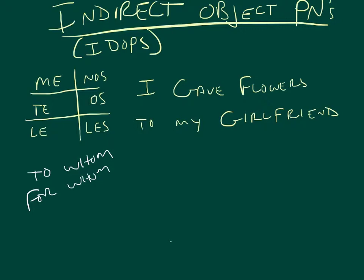Let's take a look at the sentence, I gave flowers to my girlfriend. Let's diagram that, just as we had before. The subject of the sentence, like I always said to you, the person doing the action is I, that's the subject.